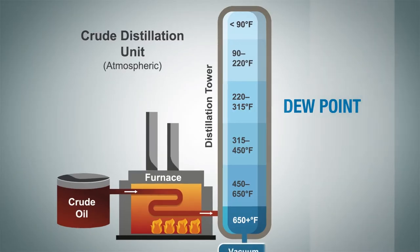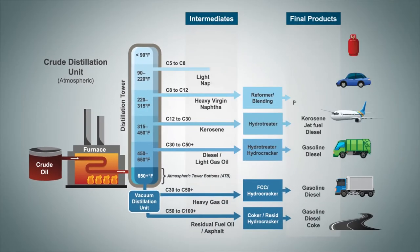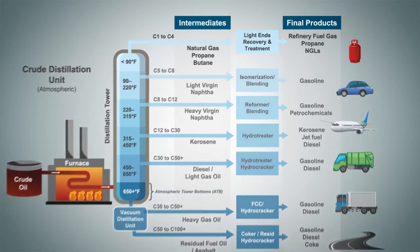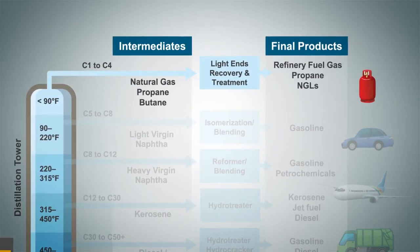These condensed fractions are then removed from the side drawers on the tower. The lightest portion of the crude leaves at the top of the tower as a vapor. These materials have a boiling point of less than 90 degrees and are typically comprised of components such as methane, ethane, propane, or butane.